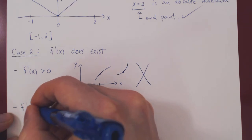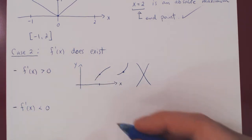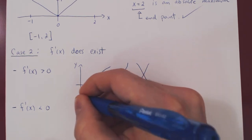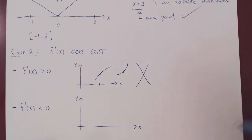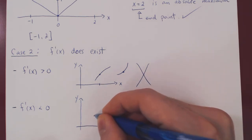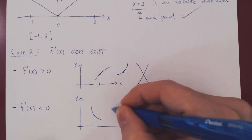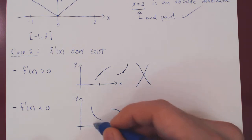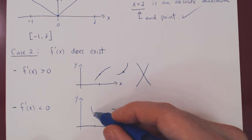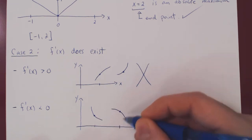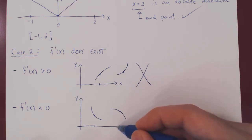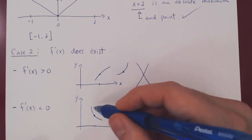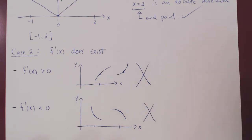What if the derivative is negative? Now the function is decreasing. Could these points give us a maximum or minimum value? Whether decreasing concave up or concave down, the answer is no. If you move to the left you get an even larger value, and to the right an even smaller y value. So when the derivative is negative, the function can never yield a maximum or minimum value.